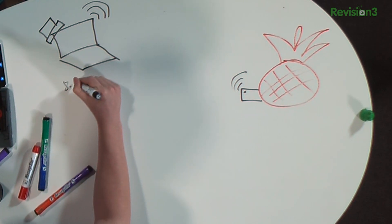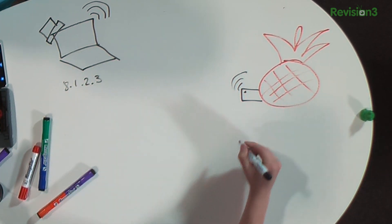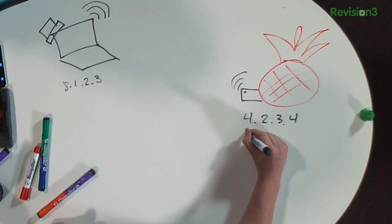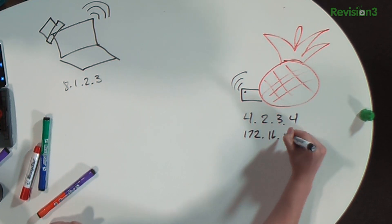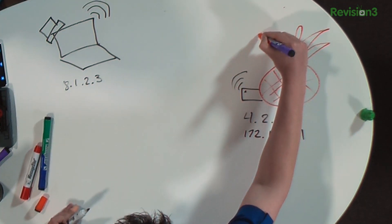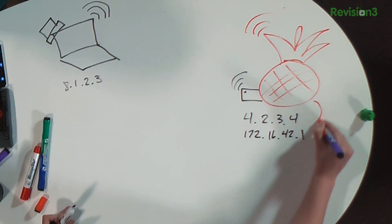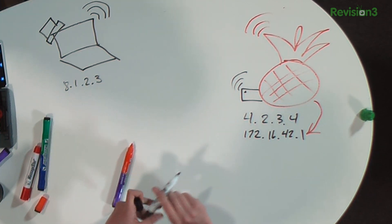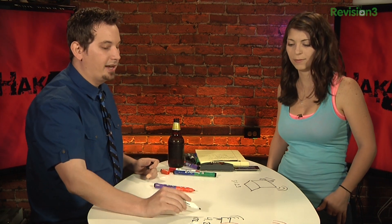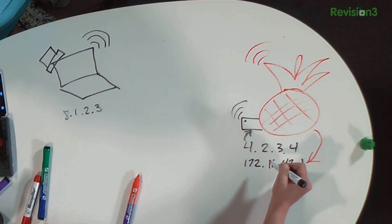We're on some Wi-Fi at, say, a coffee shop. They're two different machines. Let's say this one has an IP address of 8.1.2.3 and this one has an IP address of 4.2.3.4, just for example's sake. The pineapple is actually also 172.16.42.1, because it has multiple interfaces — the 3G is providing its public IP and the 172.16.42.1 is its Wi-Fi interface.